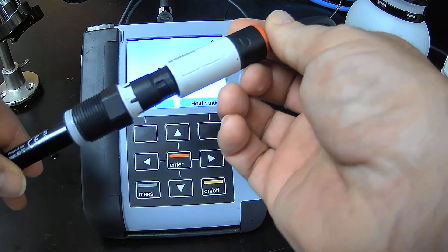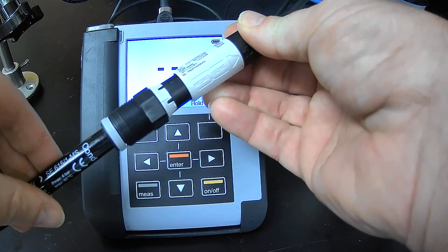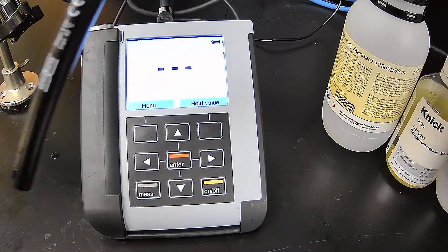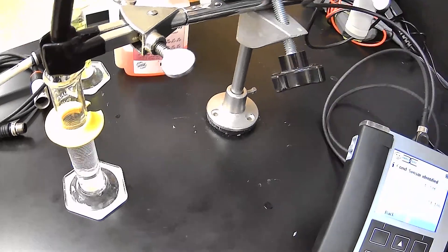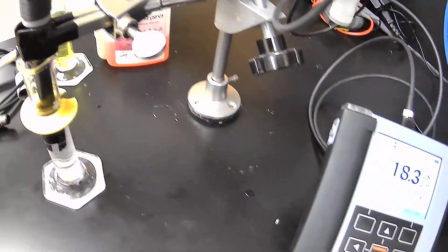The way we do this is we use the bayonet connection, the memo sense inductive connection. What I'm going to do is put it into the conductivity solution that I've already prepared.